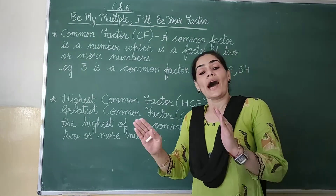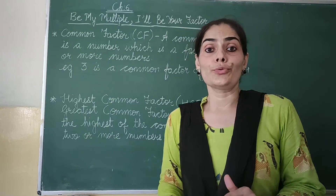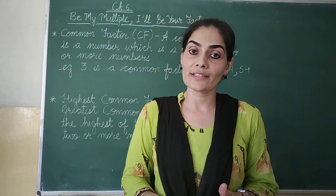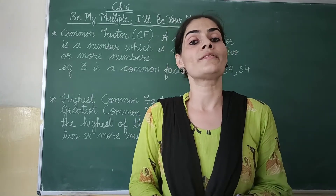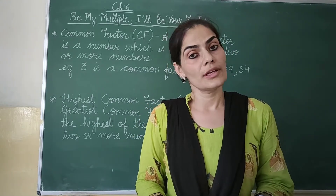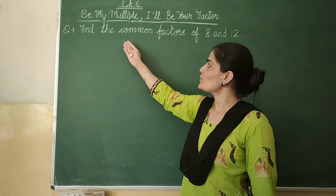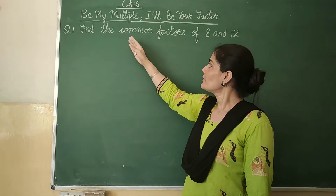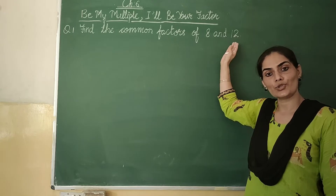So we define it as: HCF is the highest of the common factors of 2 or more than 2 numbers. Now I am going to explain how to find the common factors and also the highest common factor of 2 numbers. Let's start with the question: find the common factors of 8 and 12.